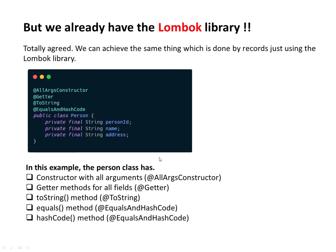Now, we all know about the Lombok library - so why would I use record instead? I totally agree we can achieve the same thing done by the record just using the Lombok library. As you can see in this example, we are using @AllArgsConstructor, @Getter, @ToString, and @EqualsAndHashCode. The Person class will then contain a constructor with all arguments, getter methods for all fields, toString method, equals method, and hashCode method.